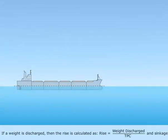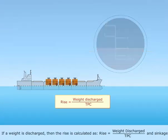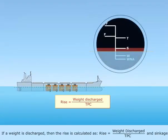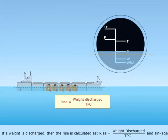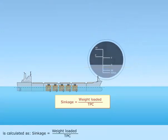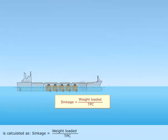If a weight is discharged, then the rise is calculated as: rise equals weight discharged over TPC. And sinkage is calculated as: sinkage equals weight loaded over TPC.